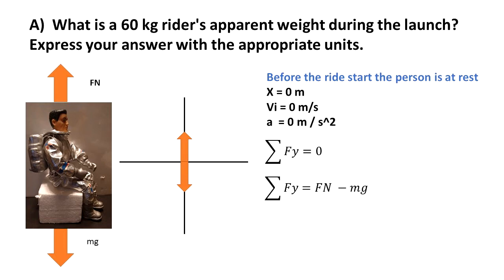The only forces that we have in this case are FN going up and mg going down. So 0 is equal to FN minus mg. It can be concluded that FN is equal to mg before the ride starts, when the person is at rest.